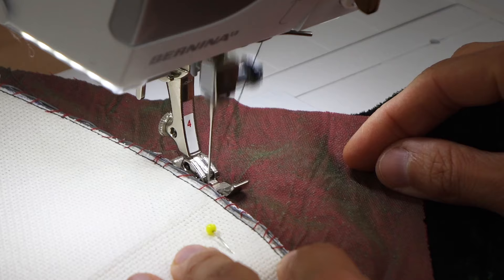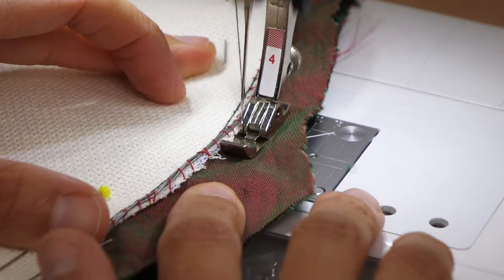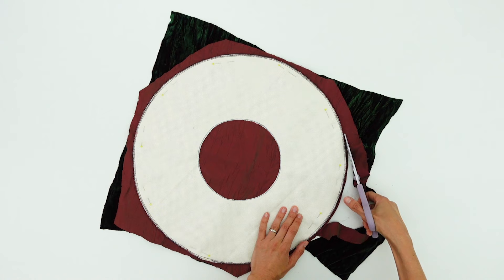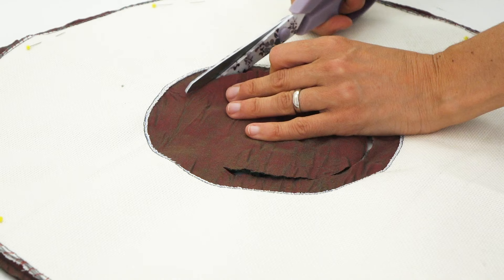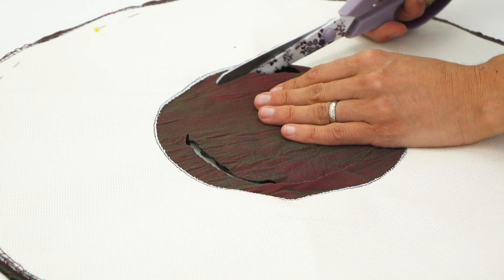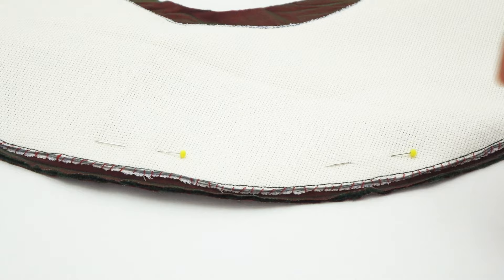This narrow presser foot that you should find with your machine accessories is once again quite useful. We are going to cut the excess fabric with great care at about 2-3mm from the seam as well as the inside hole at about 1-2cm from the interfacing and then we turn our brim inside out.